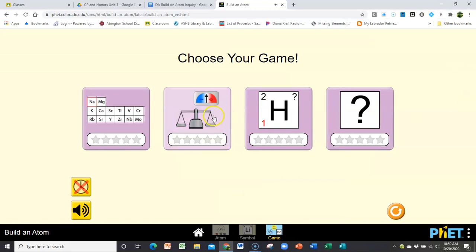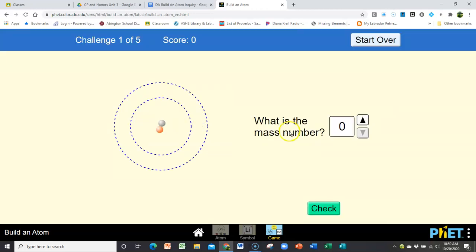And then the third try, I call this a balance. So you would click on this, and you would notice that there is a proton and a neutron. So the mass number should be 2. Yay!